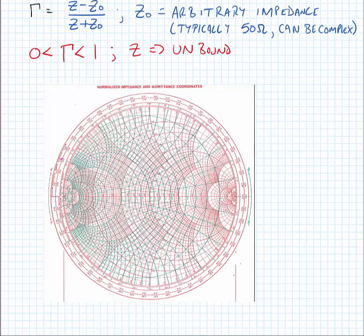So this is a Smith chart. Sometimes we call this an admittance chart because it has both impedance and admittance on a single chart. The impedance chart is in red and the admittance chart is in green.